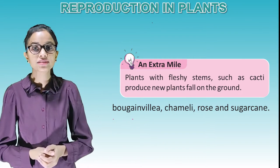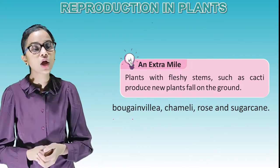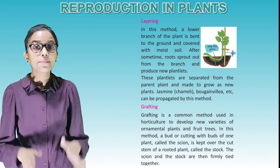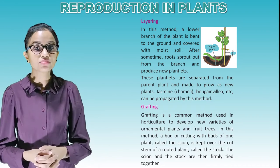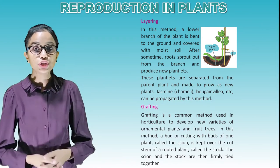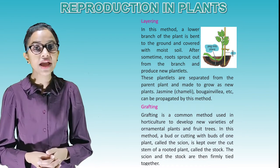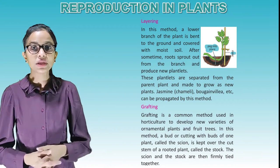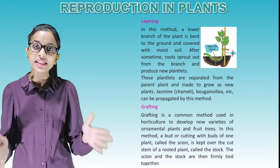Plants with fleshy stems such as cacti produce new plants when they fall on the ground. Layering: In this method, a lower branch of the plant is bent to the ground and covered with moist soil. After some time, roots sprout out from the branch and produce new plantlets. These plantlets are separated from the parent plant and made to grow as new plants. Jasmine and bougainvillea can be propagated by this method.